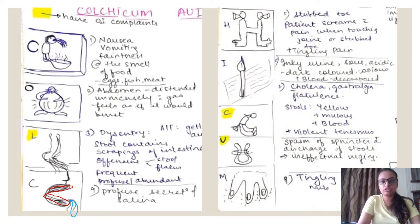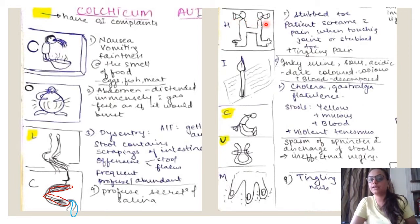This is H. I have shown two soles and the feet. So the patient has stubbed toe and he screams. Patient screams with pain when touching joint or stubbed toe and there is tingling pain in the toes. We have to remember that Colchicum is a good remedy for rheumatism as well. So all these symptoms can be added in the section of rheumatism as well.